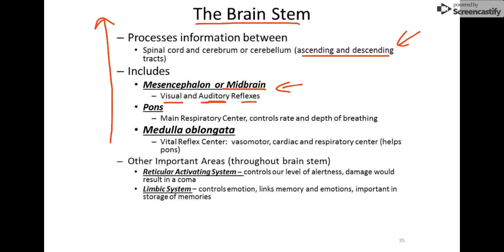The pons is our main respiratory center, working with the medulla in some areas. Moving to the very bottom of the brainstem — the part that connects to the spinal cord — is the medulla oblongata, which I call the vital reflex center. It controls vasomotor functions like vasoconstriction and vasodilation for blood pressure and body temperature regulation. It also contains the cardiac center and assists with respiration — essentially the functions that keep you alive.